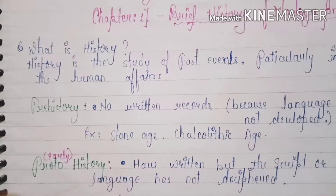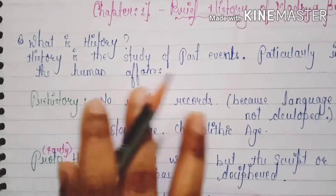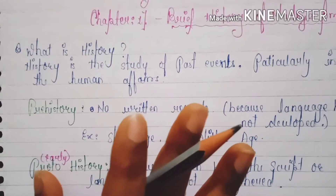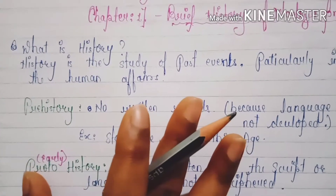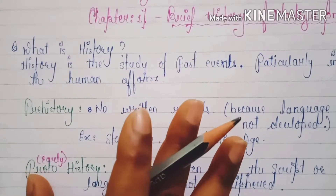What is history? History is the study of past events, particularly in human affairs.